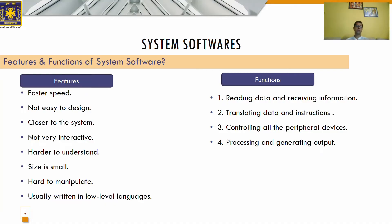Since system software is written in machine code, its functions include: reading data and receiving information, translating data and instructions, controlling all the peripheral devices, and processing and generating the required output.